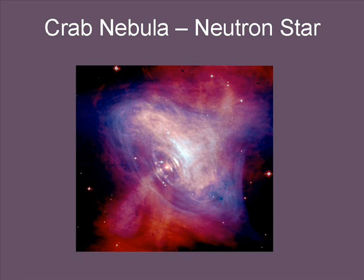Looking at this Crab Nebula, this is actually a composite image. The bluish-whitish stuff is from the Chandra X-ray Telescope, and the reddish stuff is from the Hubble Telescope. The little dot there in the center is the neutron star itself, and there's actually a gas — sort of a hosing-liner pushing out — that's actually particles that are escaping.